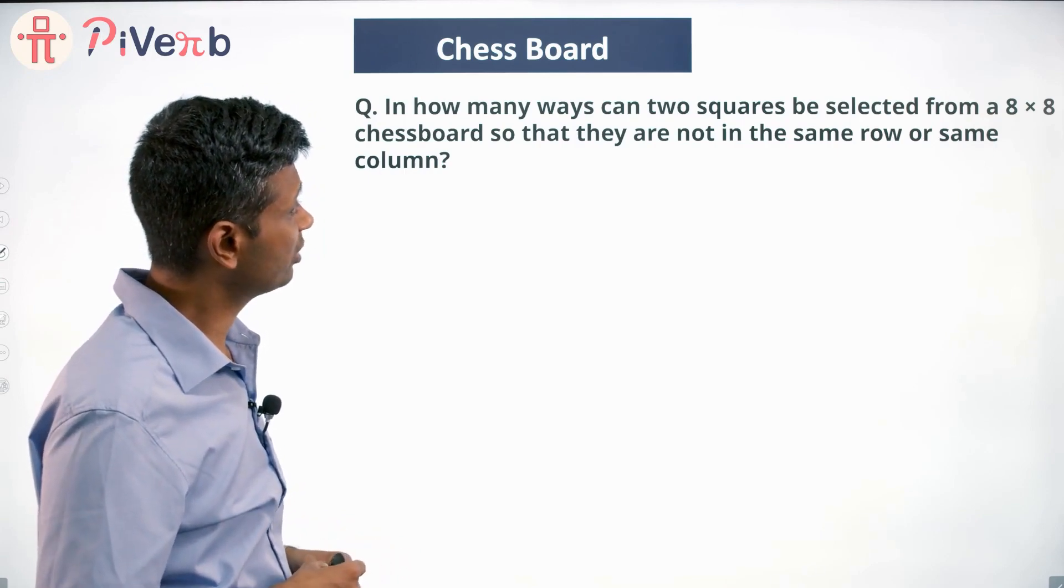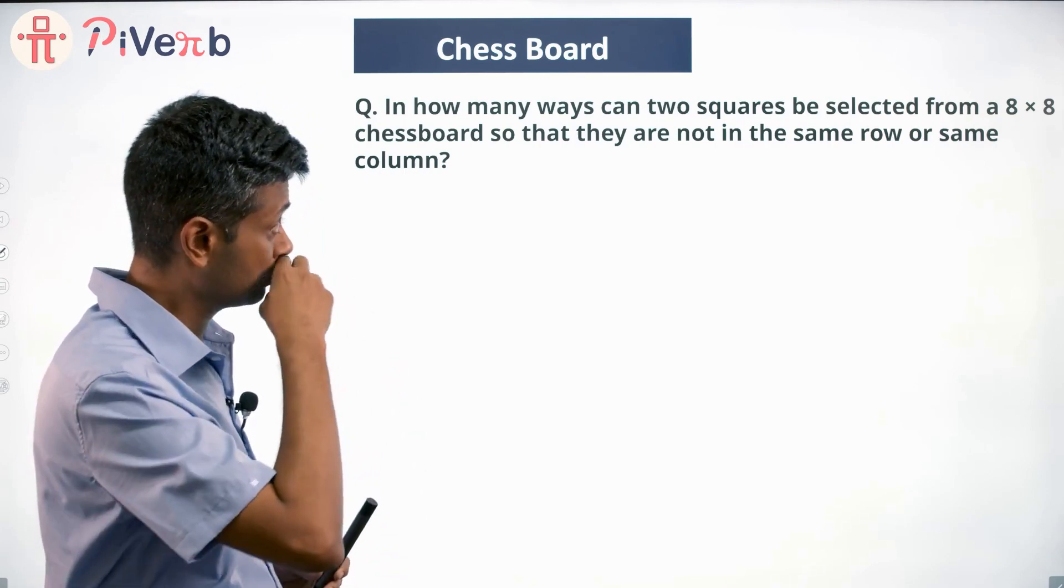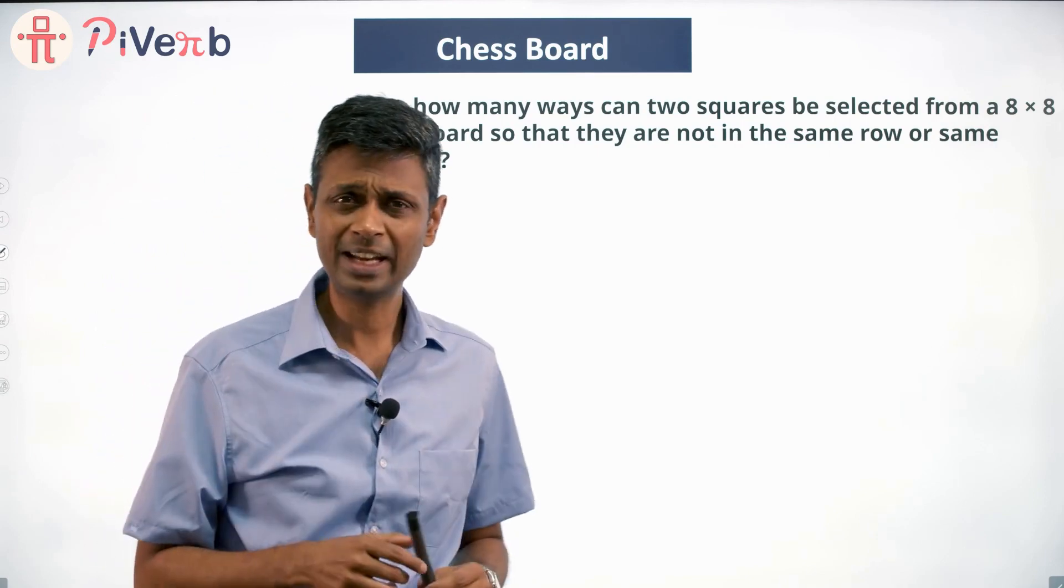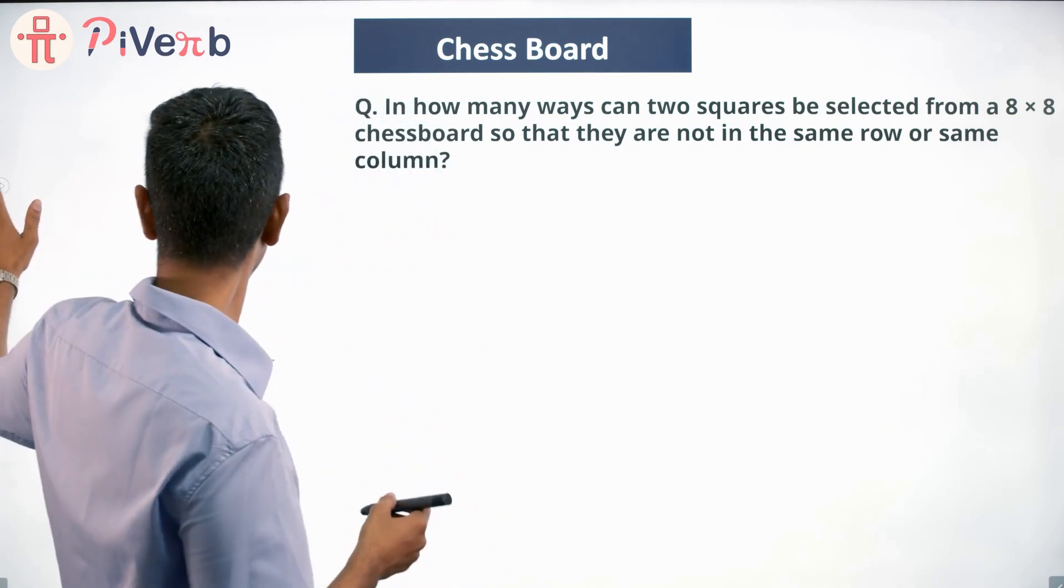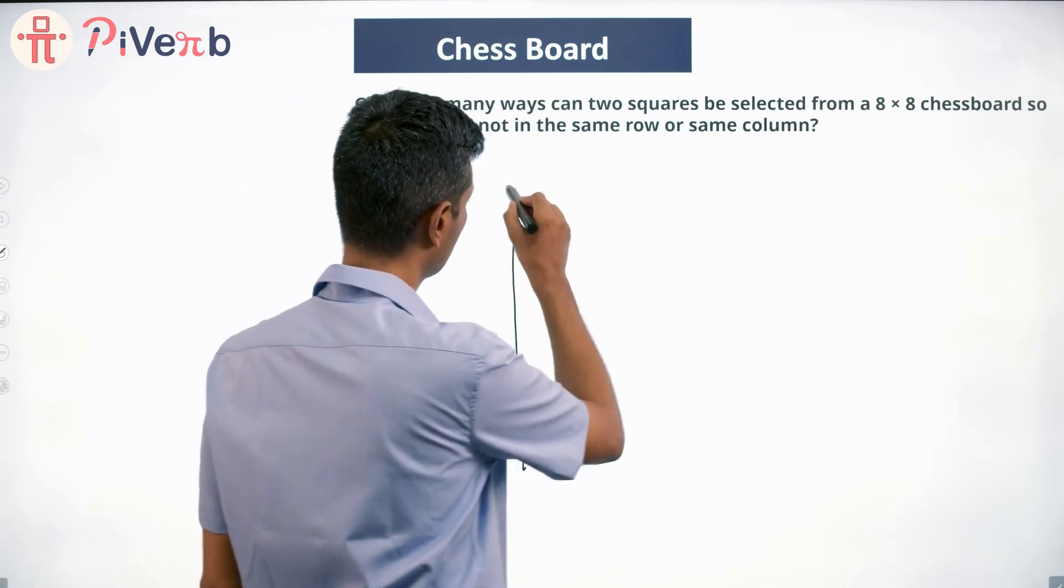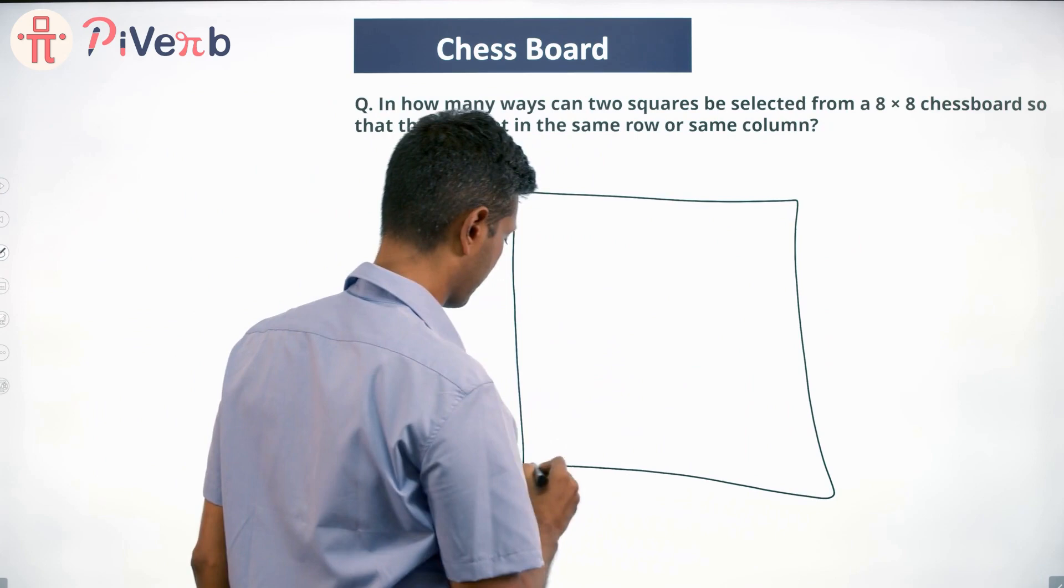In how many ways can two squares be selected from an 8×8 chessboard so that they are not in the same row or same column? 8×8 chessboard, not in the same column, not in the same row. I'm going to imagine an 8×8 chessboard. Let's break it into...